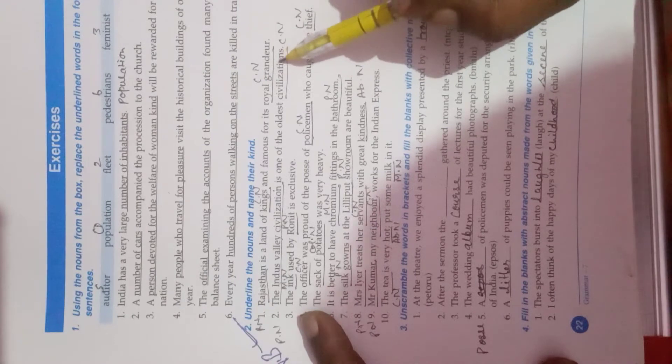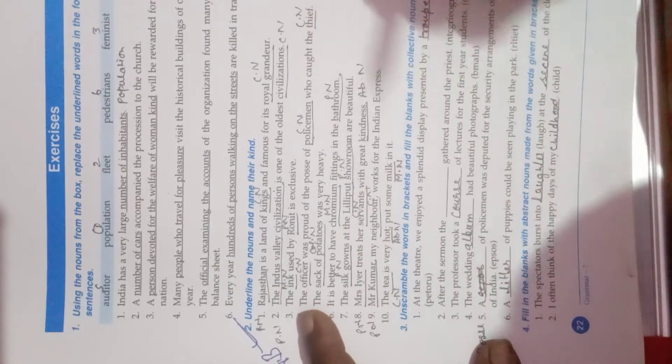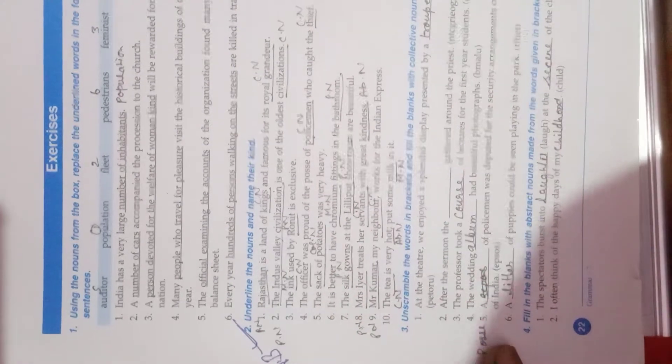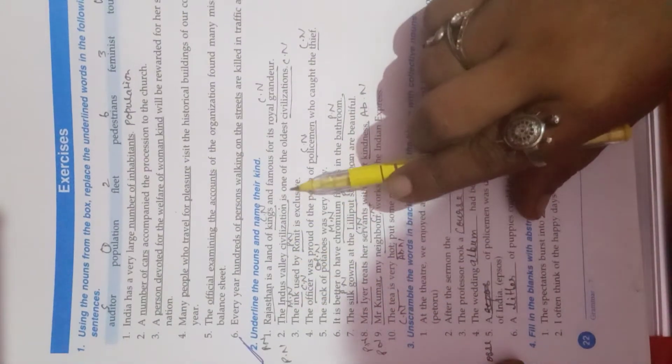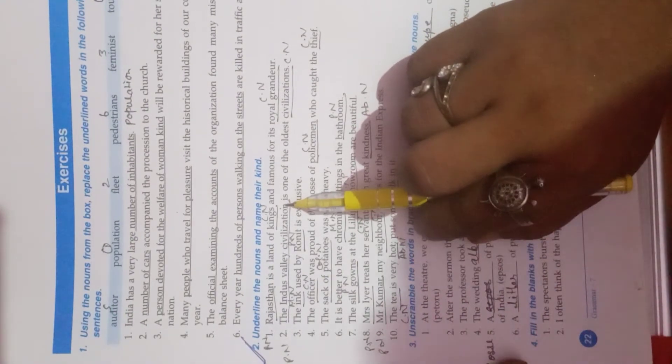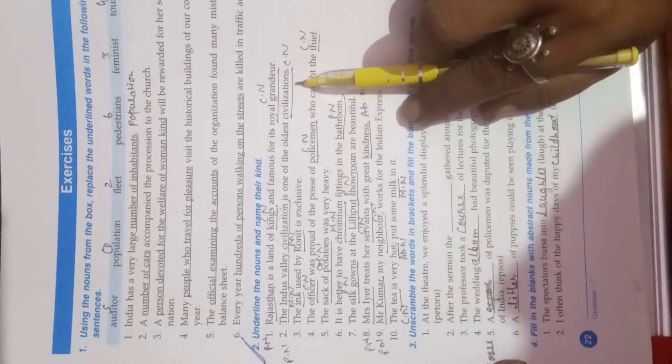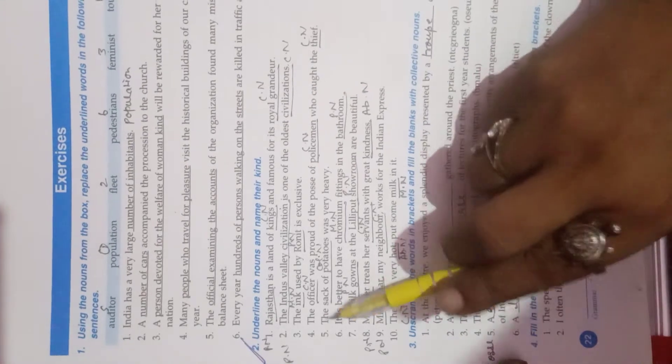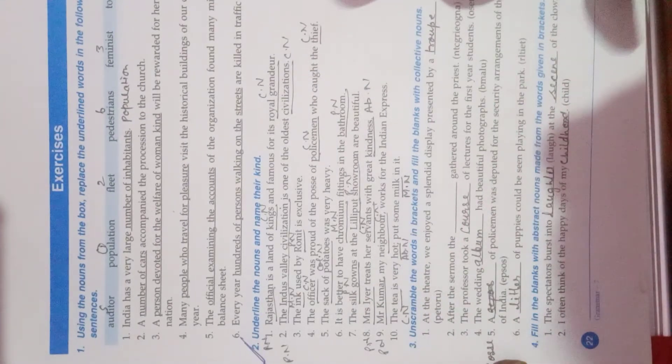Royal gardener. This is a common noun. The Indus Valley civilization is one of the oldest civilization. So Indus Valley civilization is a proper noun and civilizations is a common noun. In this way, you have to do this exercise in the notebook.